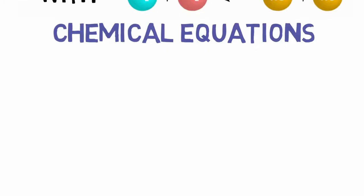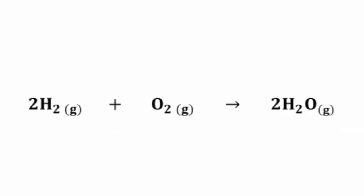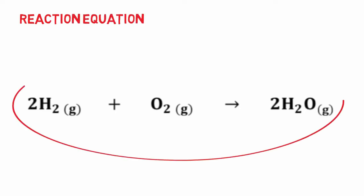There are some definitions that we need to learn before moving on with our discussion of chemical reactions. A reaction equation is the notation used to illustrate a chemical reaction. This is the chemical equation for the reaction of hydrogen gas with oxygen gas to form water vapor.